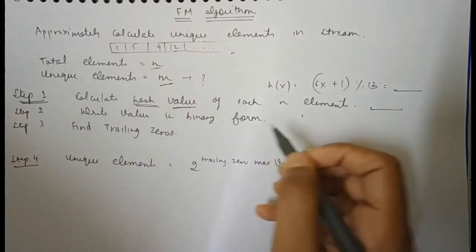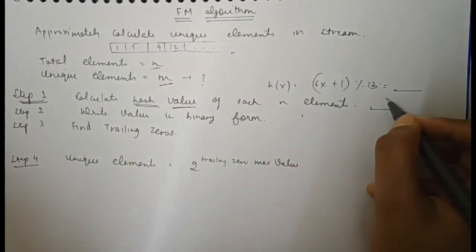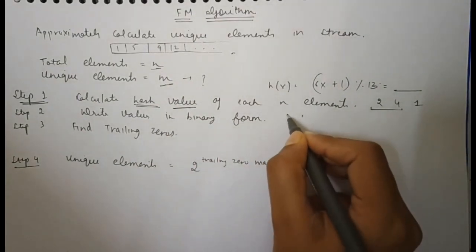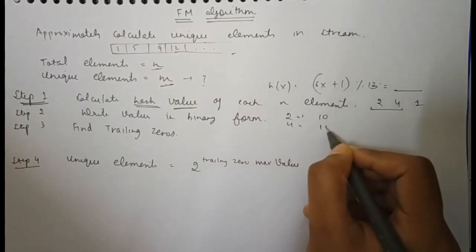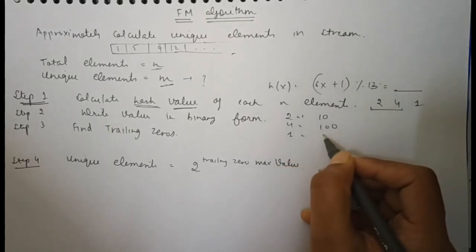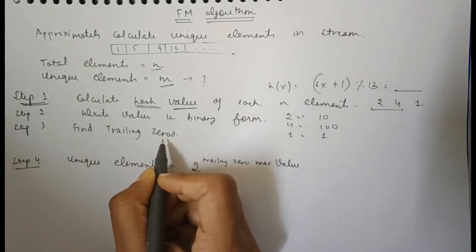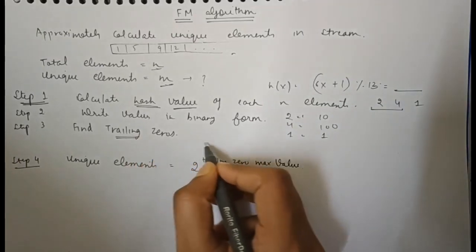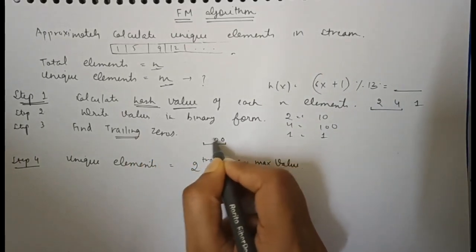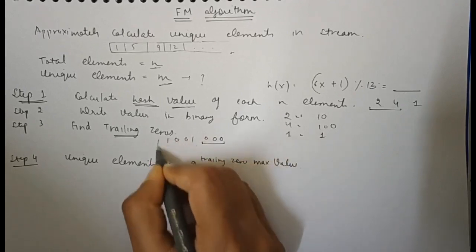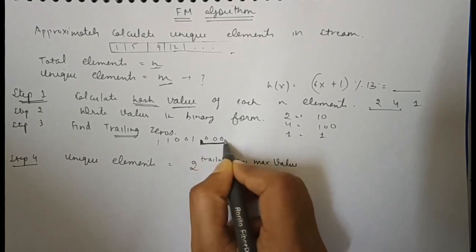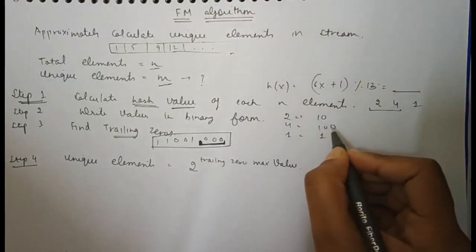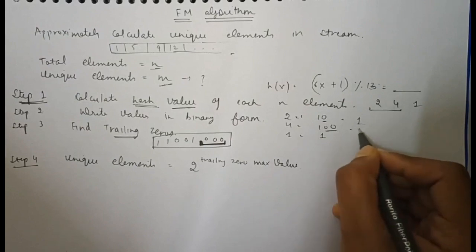Then we write the values in binary format. For example, after hashing, the values we get are 2, 4, and 1, so we write them in binary form. Now what we do is find the trailing zeros. Trailing zeros for integers written in binary format means from the last we count the number of continuous zeros before a 1 is encountered. So for 2 the trailing zeros is 1, for 4 it is 2, and for 1 it is zero.